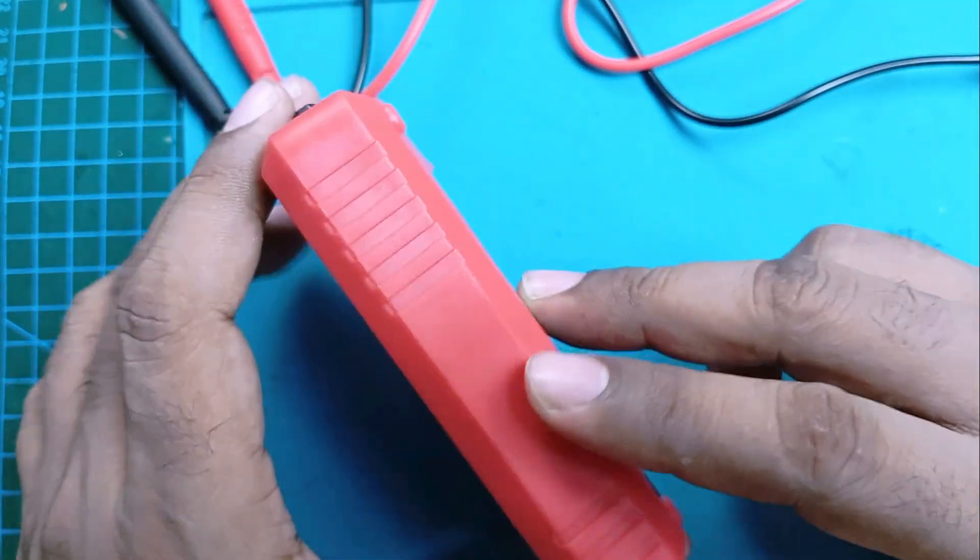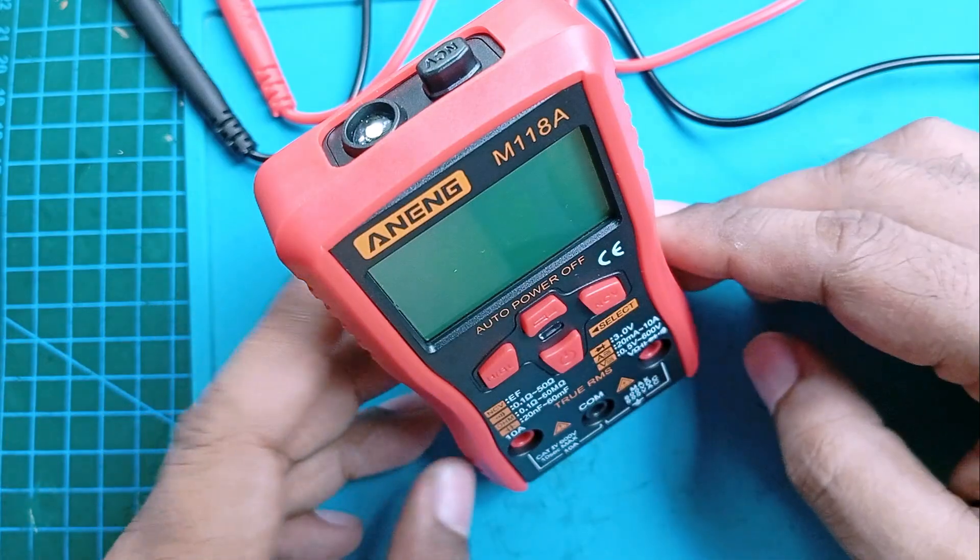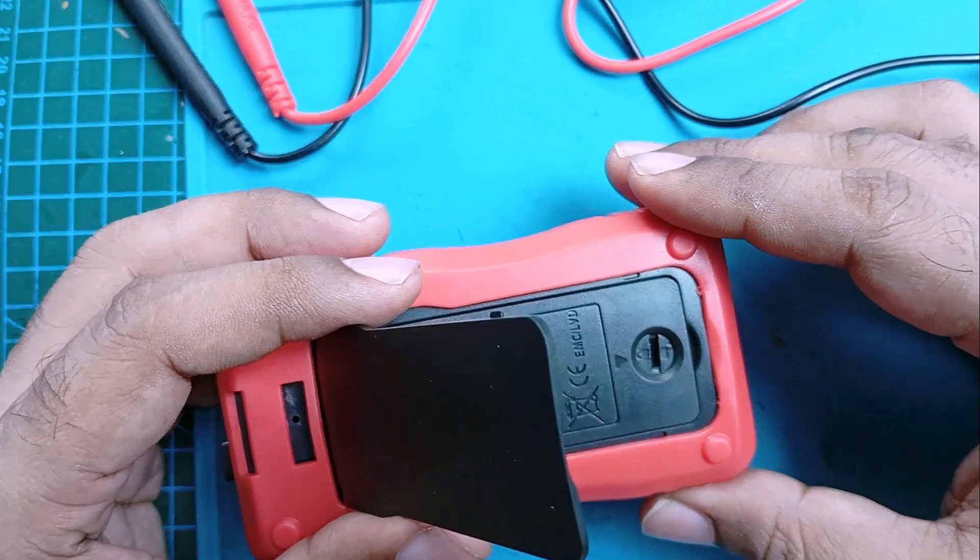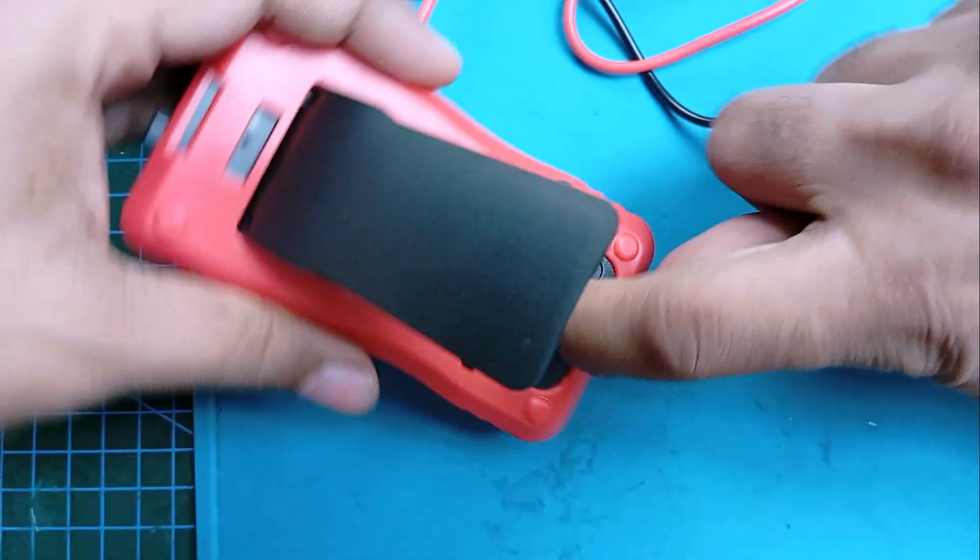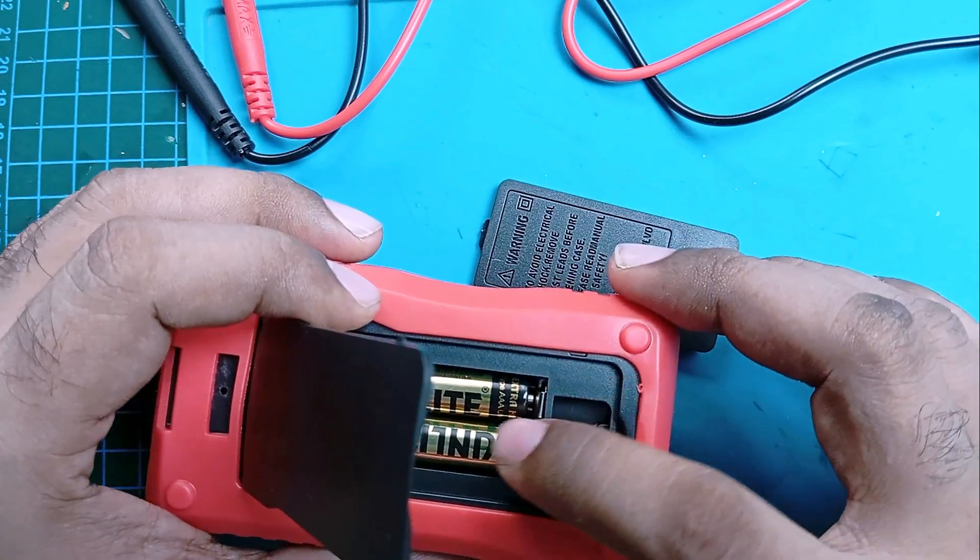On the back side it has a stand - you can put it like this. Behind the stand it has the battery cover. You can unscrew it and open it. It runs with two triple-A batteries.